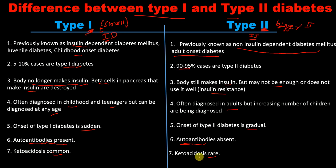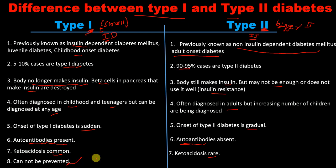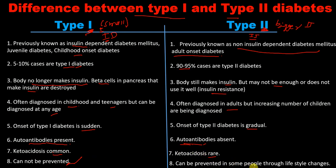Finally, point number 8: type 1 diabetes mellitus cannot be prevented, because it is insulin dependent. Whereas type 2 diabetes mellitus can be prevented in some people through lifestyle changes. These are the basic differences between type 1 and type 2 diabetes mellitus. Please subscribe to our channel to support us — thank you very much.